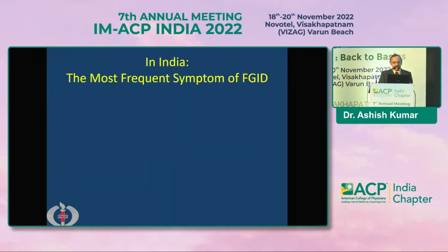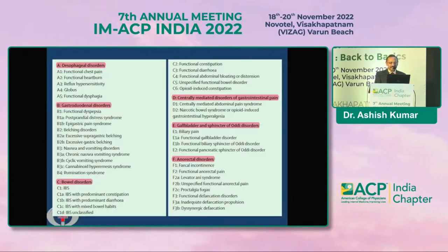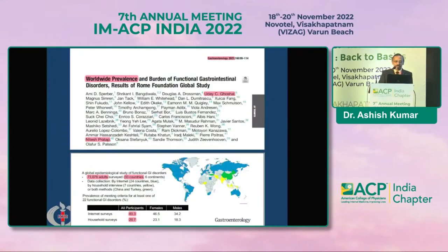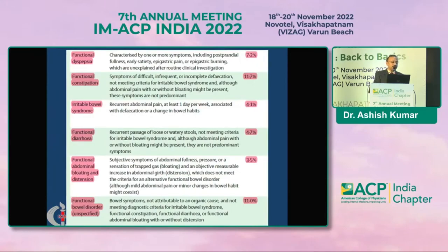How common are functional gastrointestinal disorders? In India, the most frequent symptom of functional disorder is gas. Anytime patients present — even in a cardiology clinic or diabetic clinic — most patients will, in addition to complaining of their main symptoms, also say that they are having gas and want to get rid of it. Looking at all disorders from esophagus to gastroduodenal disorders, IBS, and bowel disorders, many of these have gas as one of the important symptoms. A global study on worldwide prevalence of functional GI disorders found that at least 20–40% of the population suffer from some functional GI disorder, ranging from dyspepsia, constipation, IBS, diarrhea, or even just abdominal bloating.